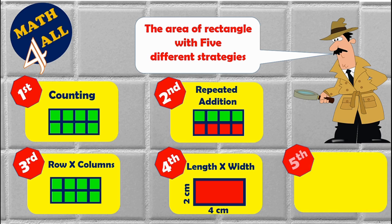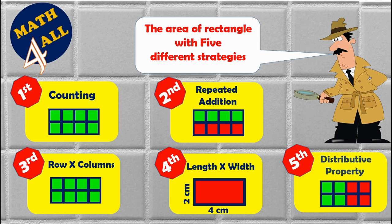The fifth strategy, the distributive property: if you can't multiply a big number directly, break it into two parts. The first part is two rows by two columns equals four, and the second part is two by two equals four. Four plus four equals eight square units. Use whichever strategy you want to find the area. That was our lesson — thank you!